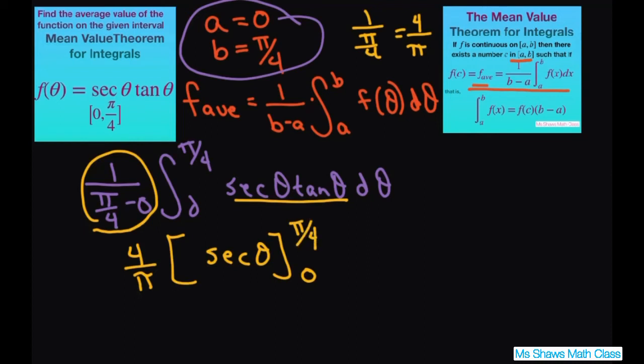So now let's evaluate this. We're going to get this equals 4 divided by pi times secant of pi divided by 4 minus secant of 0.